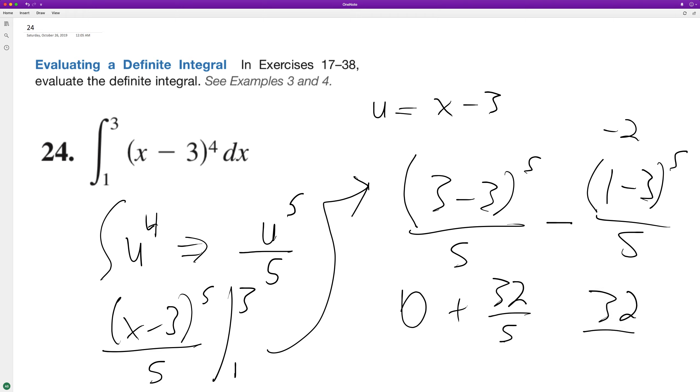So 32 over 5, or 6.4, whichever one you want.